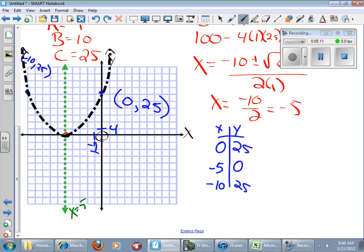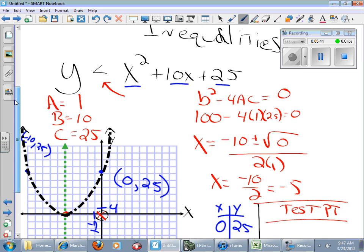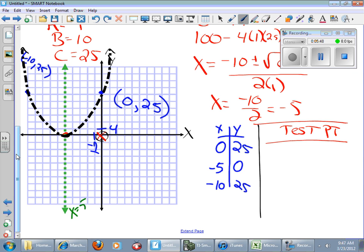Now I have to decide about shading because of the inequality. Remember, I'm going to use a test point. For the test point, I can use any point on the graph that the graph doesn't go through. A great test point is 0, 0, because it makes the math easy. So I'm going to plug 0 in for y and 0 in for x into the original inequality. If I get a true statement, I will shade where the origin is. If I get a false statement, I'll shade within the boundaries of the parabola.